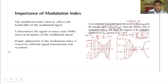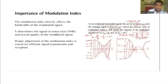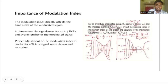Importance of modulation index: modulation index directly affects the bandwidth of the modulated signal. It determines the signal-to-noise ratio (SNR) and overall quality of the modulated signal. Proper adjustment of the modulation index is crucial for efficient signal transmission and reception.